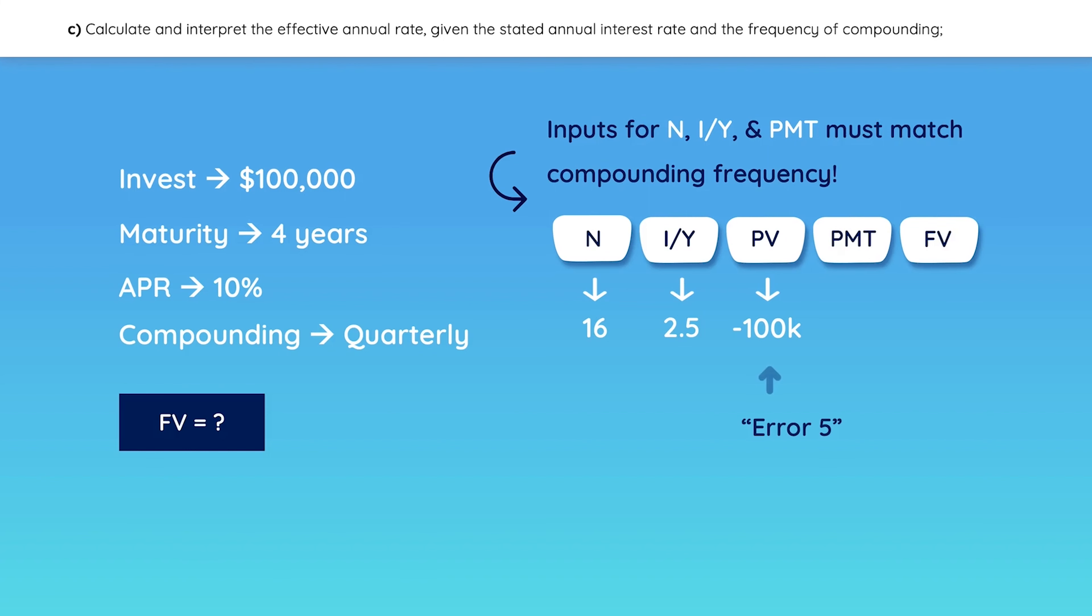If you ever get error 5 on your calculator, you most likely forgot a negative sign. Payment is zero because you're not earning any payments throughout the life of the security. And finally, click the Compute button and then the Future Value button to solve for the future value. We will look at a few more of these questions later on.